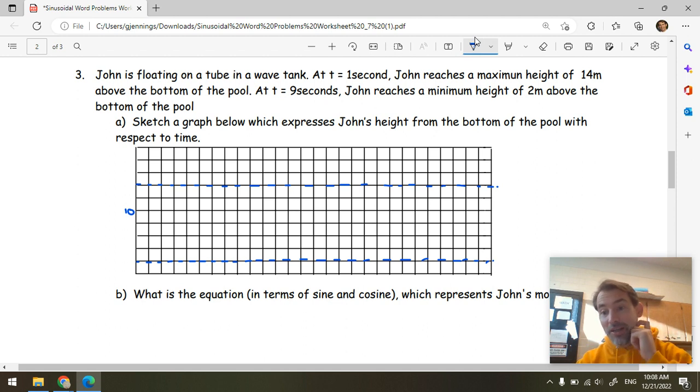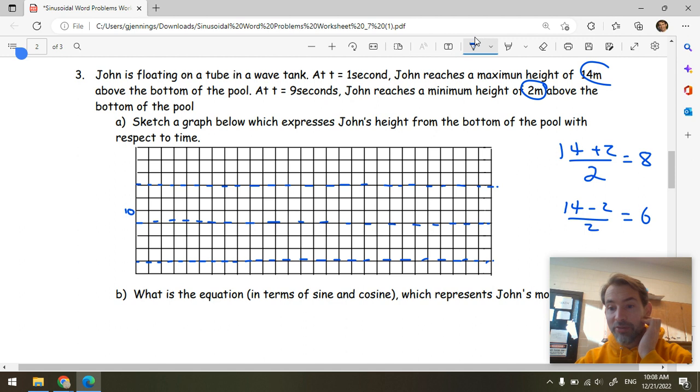The minimum was 2 meters above the bottom of the pool. So let's do a little dotted line along the minimum. And the midline between 2 and 14 is 8. So I can put a little dotted line along there. These are the things that we've already discovered. You do 14 plus 2 divided by 2, and that will give you the midline. This is 8. And then the amplitude here is just 6. You could get that by doing 14 minus 2 divided by 2.